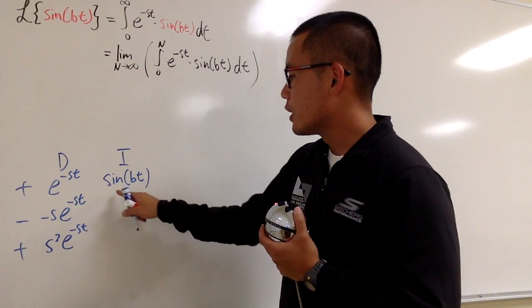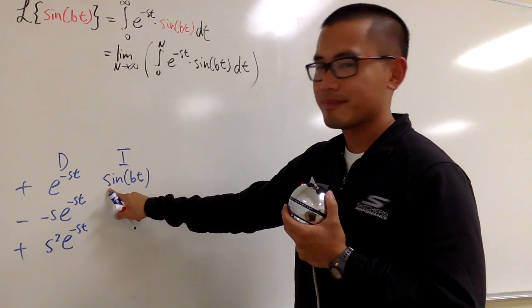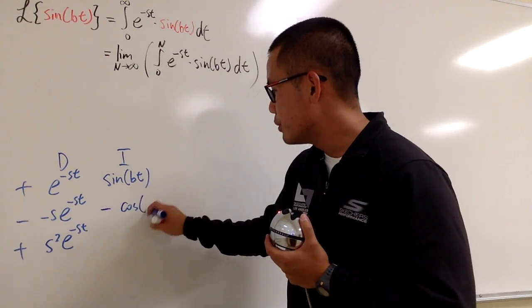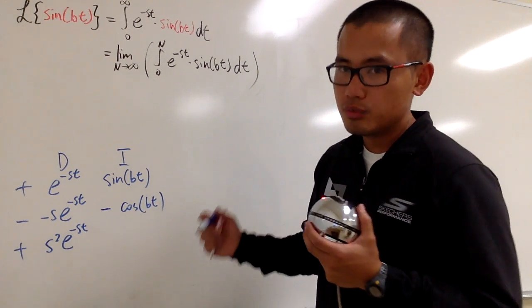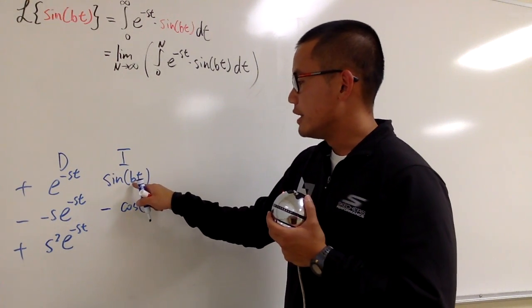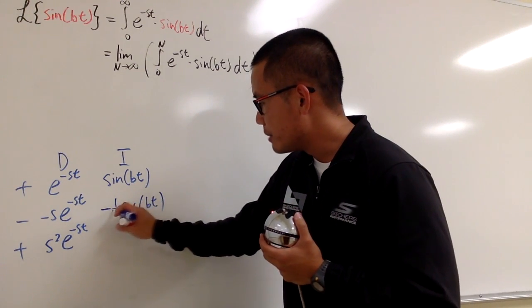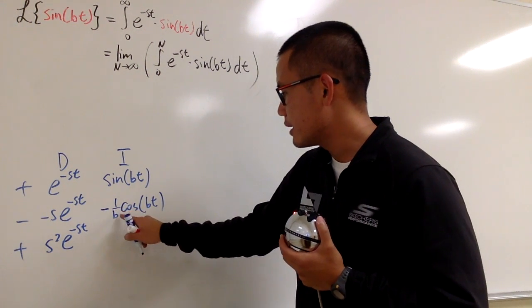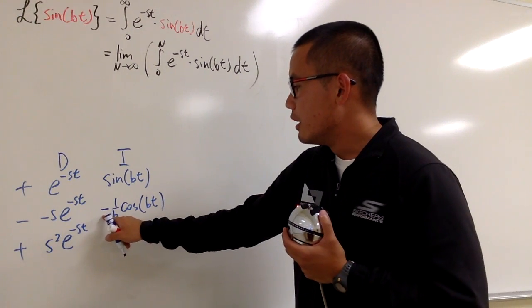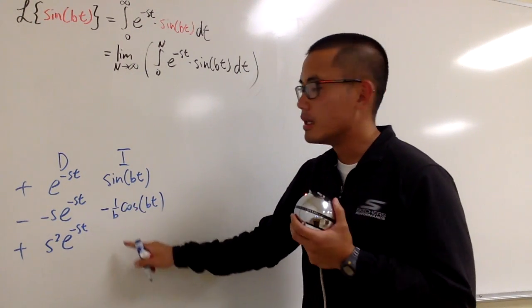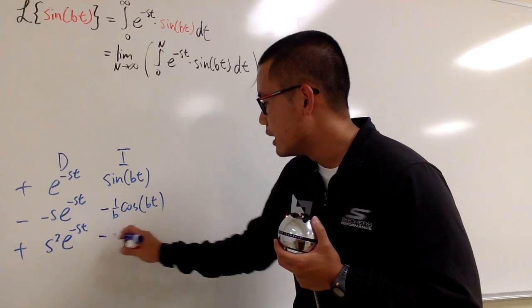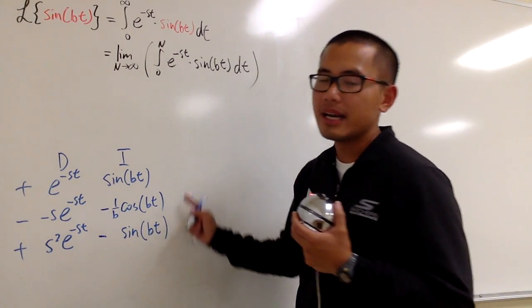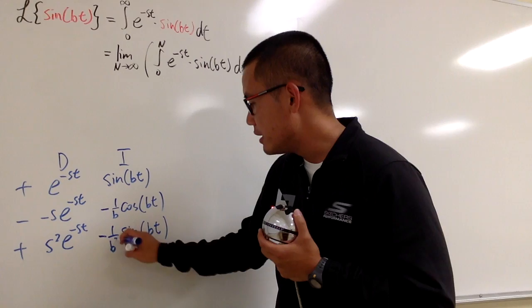Now let's integrate sine bt. The integral of sine is negative cosine, so we put down negative cosine bt. We have to divide by the derivative inside — the derivative of bt is just b — so we have 1 over b. Integrate again: the integral of cosine is sine, but we maintain the negative, so this becomes negative sine bt divided by b again, giving 1 over b squared altogether.